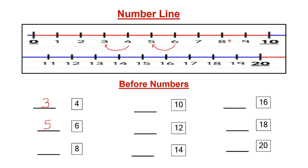The next number is number 8. Where is number 8 in the number line? Here, right? So before number 8, which number will come? Number 7. So we'll write number 7. After that, here is number 10. Before number 10, you can see number 9, right? So we'll write number 9.